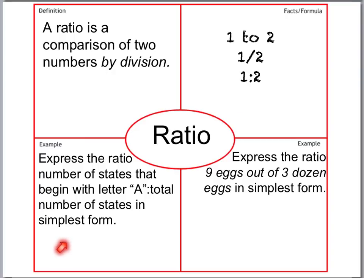We've went over this example down here already, expressing the ratio number of states that begin with letter A. Of course, that is 2 out of 25, because we reduce all fractions to their simplest form. The ratio of 9 eggs out of 3 dozen would be 1 to 4 because we convert the 3 dozen to 36, and then 9/36 reduces to 1 fourth.